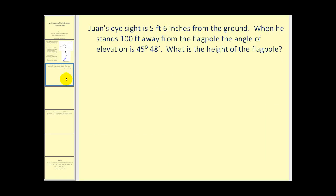Let's go ahead and take a look at a couple problems. Juan's eyesight is five feet six inches from the ground. When he stands 100 feet away from the flagpole, the angle of elevation is 45 degrees 48 minutes. What is the height of the flagpole?